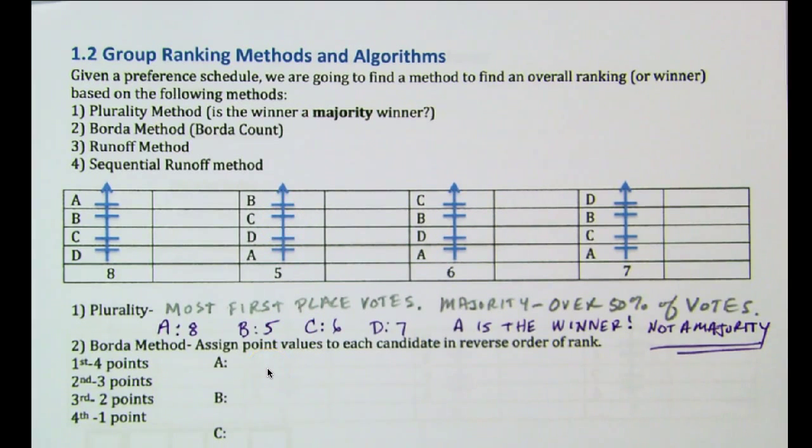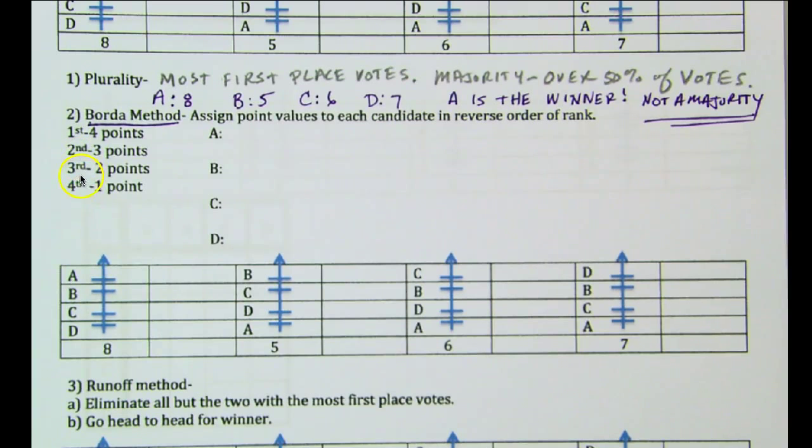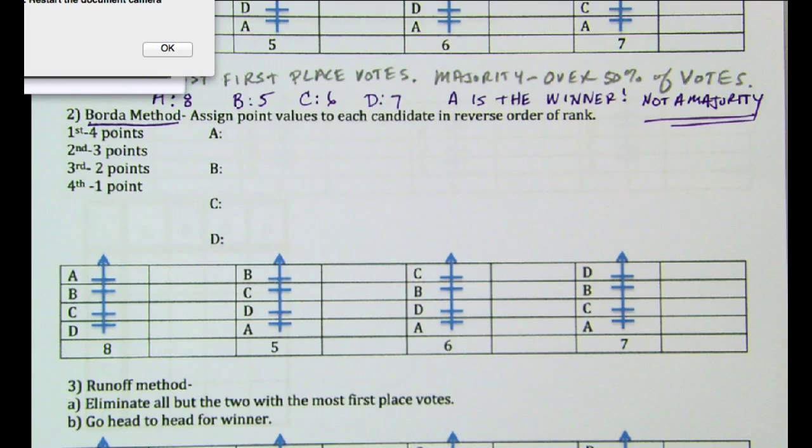Now, if we go to the Borda method, Borda method assigns point values to each candidate in reverse order of rank. So in this case, I'm going to use the same preference schedule here. This case, we still have A, B, C, D, four different candidates. And with four different candidates, I can go four, three, two, one. So first place will get four points. Second place will get three points. Third, two, and fourth, one. And so under this system, what you do is just accumulate points based upon how many people vote for you.